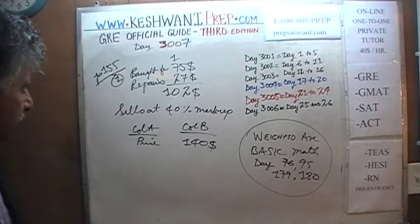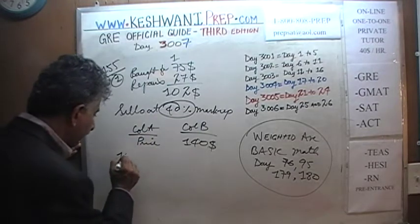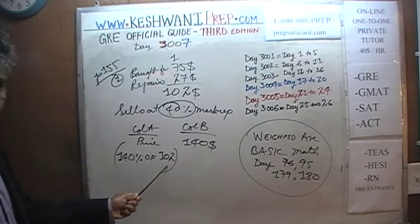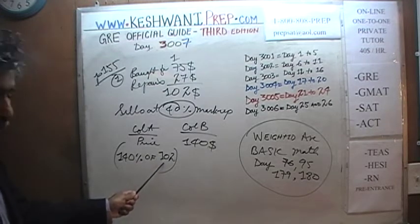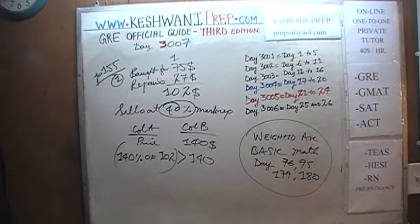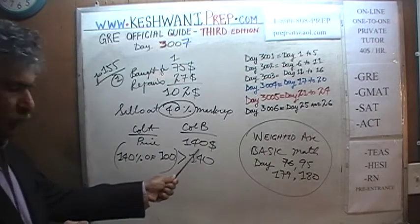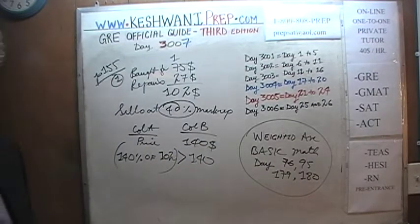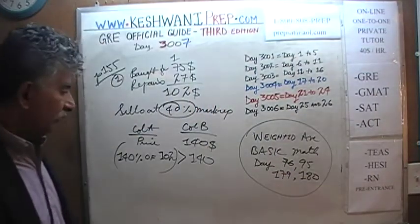A 40% markup means she sold it for 140% of $102.00. Well, 140% of $100.00 is exactly $140.00. Therefore, 140% of $102.00 — whatever it is — has to be more than $140.00. These are quantitative comparison questions; our job is simply to compare the two quantities, not compute them. Whatever it is, it's more than $140.00 — the answer is A.